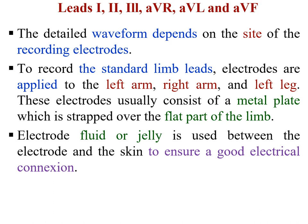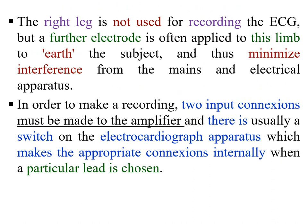To record the standard limb leads, electrodes are applied to the left arm, right arm, and left leg. These electrodes usually consist of a metal plate which is strapped over the flat part of the limb. The right leg is not used for recording the ECG, but a further electrode is often applied to this limb to earth the subject and thus minimize interference from the mains and electrical apparatus. In order to make a recording, two input connections must be made to the amplifier, and there is usually a switch on the electrocardiograph apparatus which makes the appropriate connection internally when a particular lead is chosen.